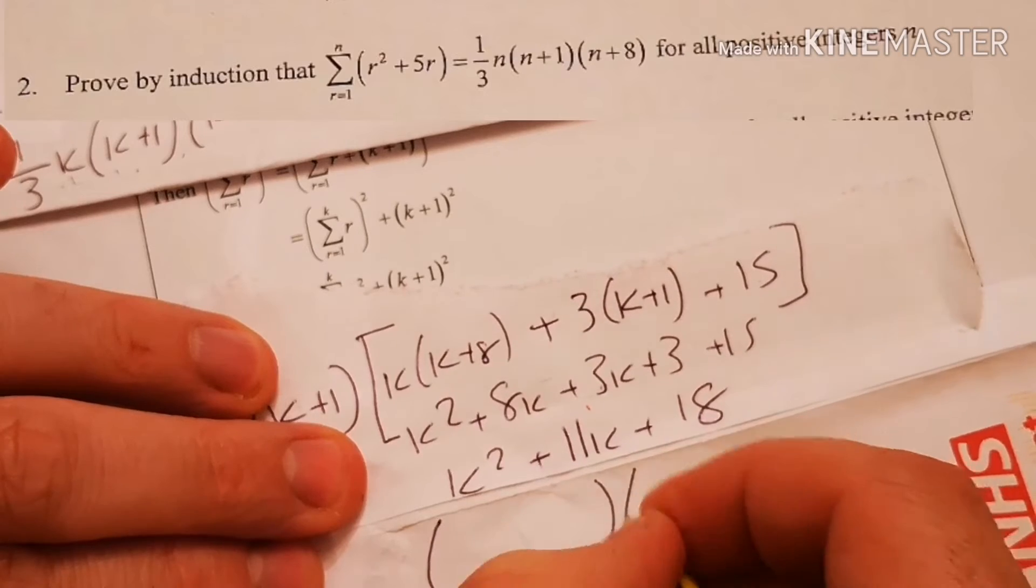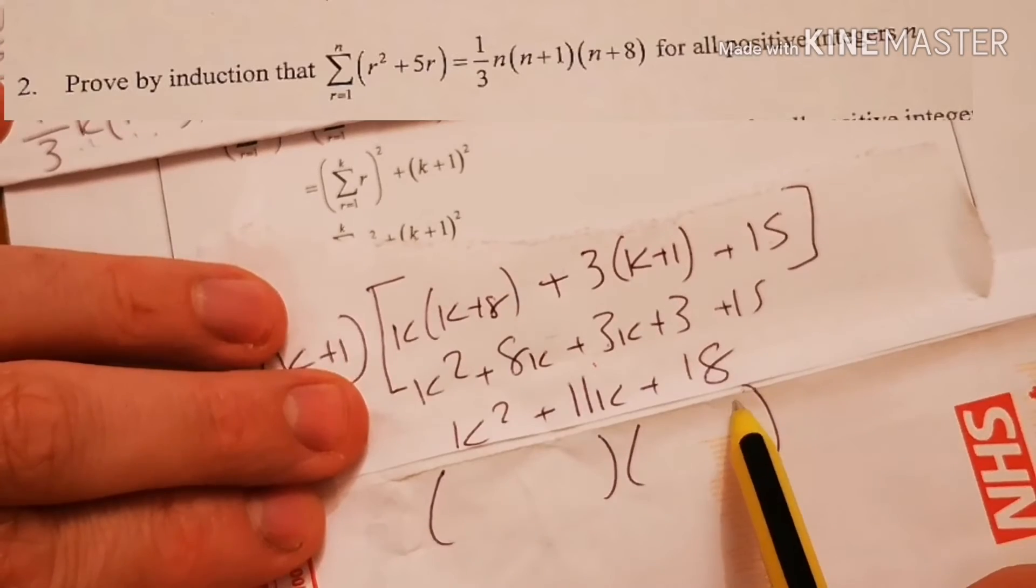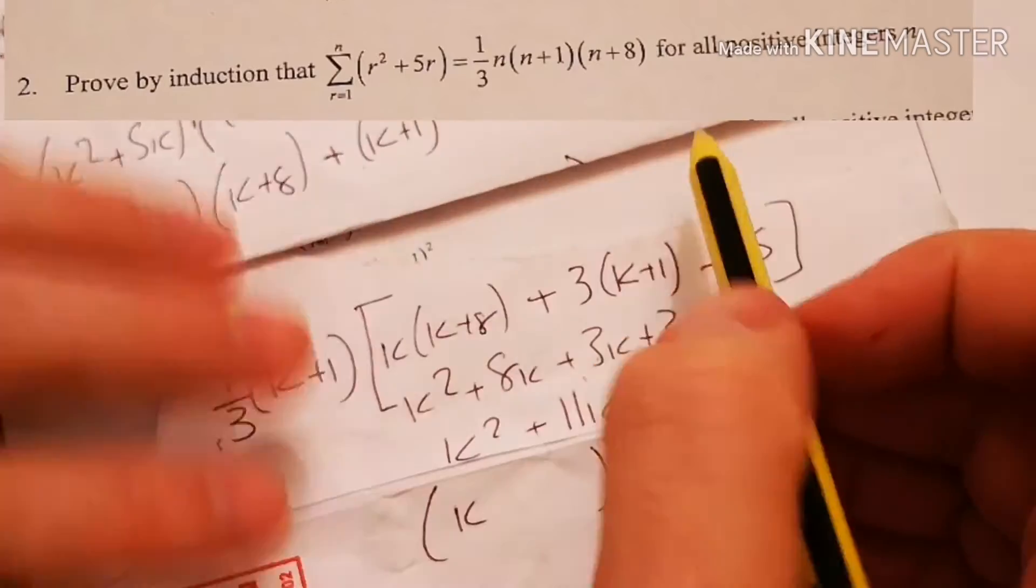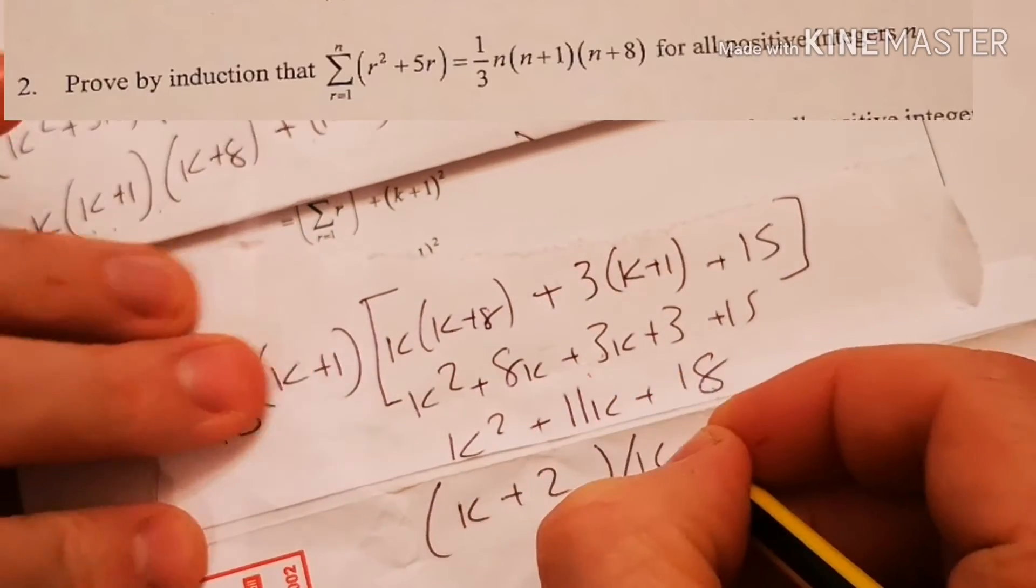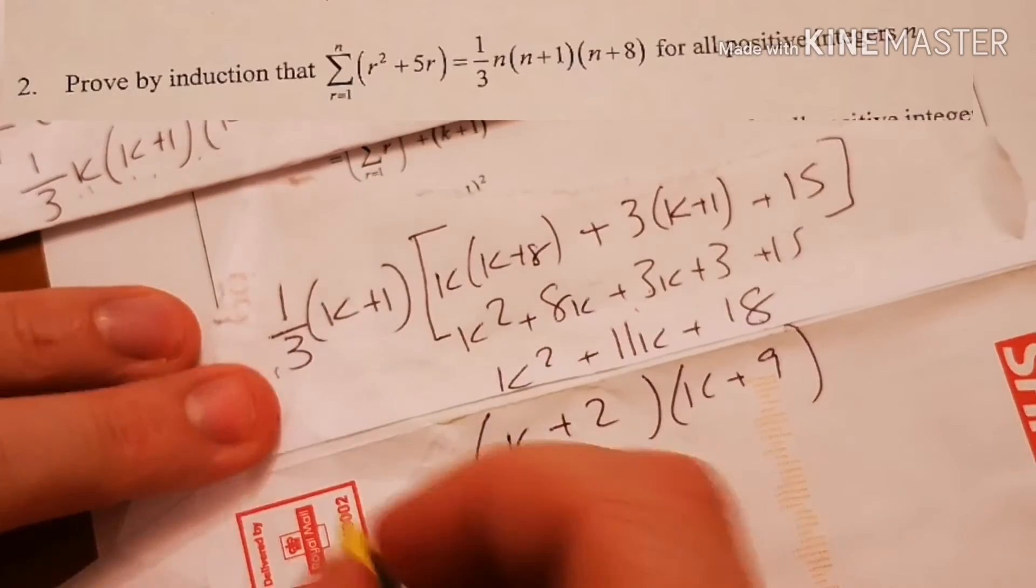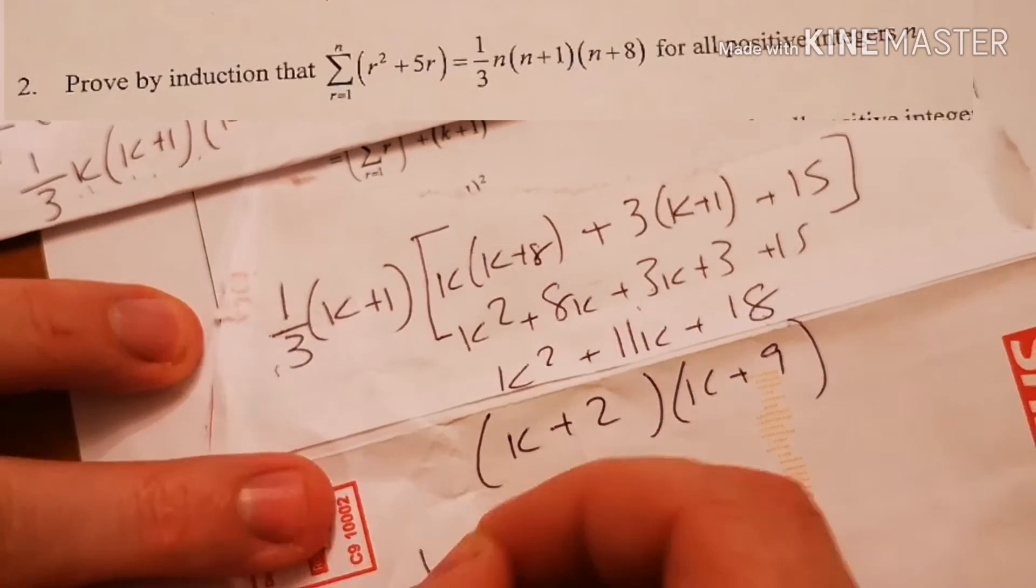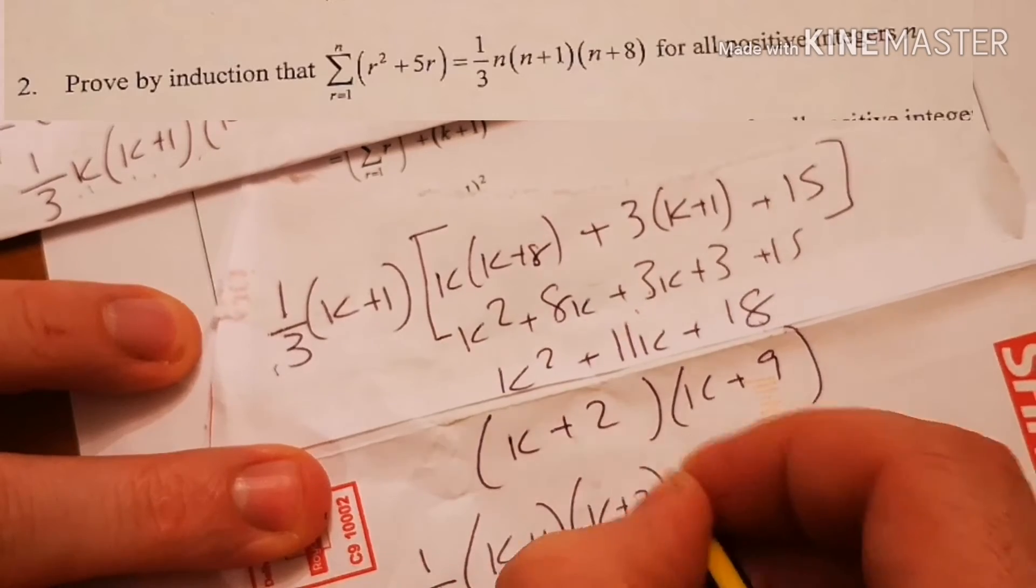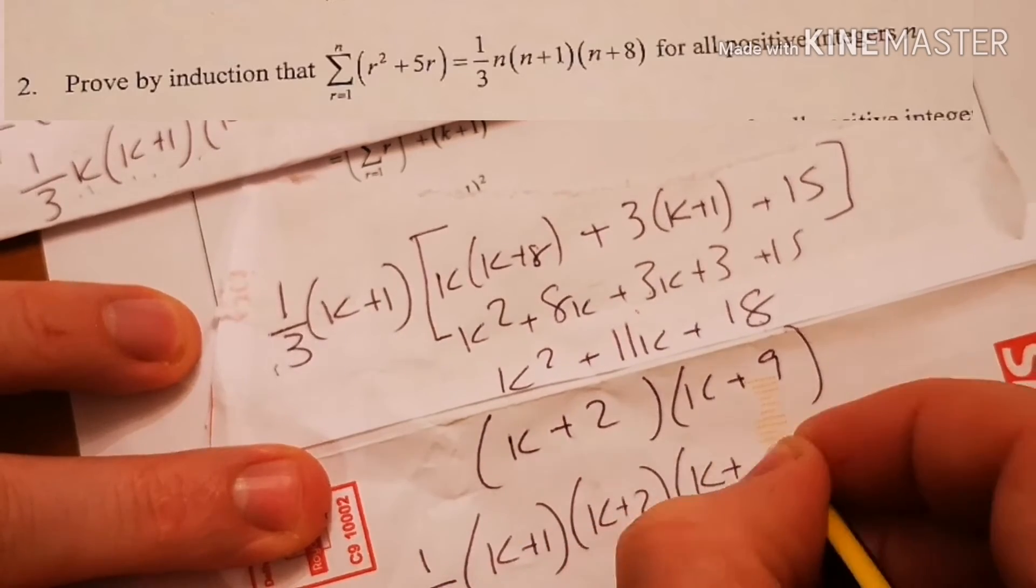So I need to factorise this. So I've got two numbers that add to give you 18, but times, sorry, times to give you 18, but add to give you 11. Oh, what a surprise it is actually 2 and 9 which is here. So k plus 2, k plus 9. So let's fill out the rest of it. So it's going to be a third, k plus 1, k plus 2, k plus 9.